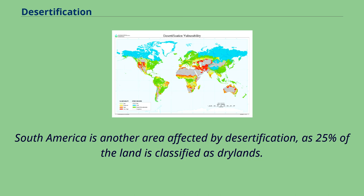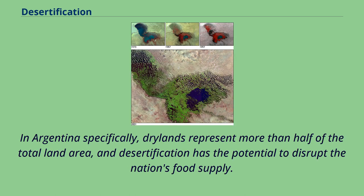South America is another area affected by desertification, as 25% of the land is classified as drylands. In Argentina specifically, drylands represent more than half of the total land area, and desertification has the potential to disrupt the nation's food supply.